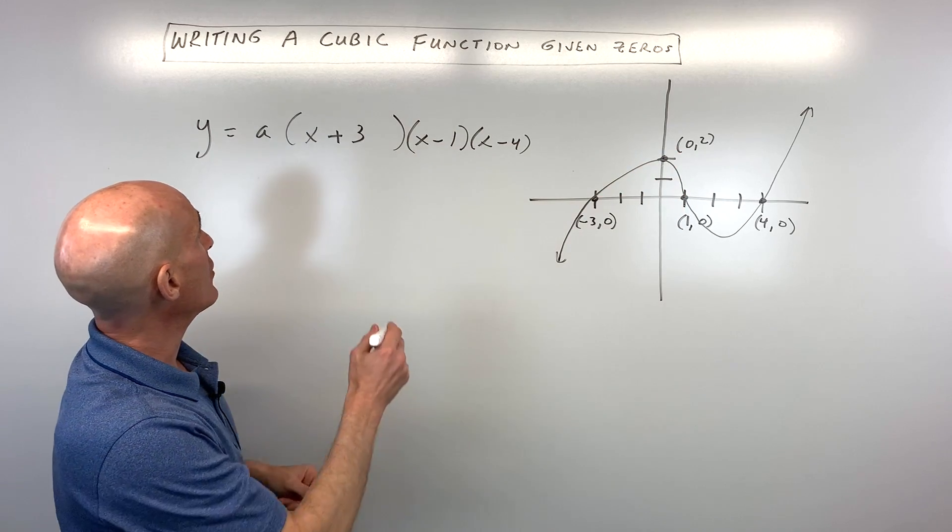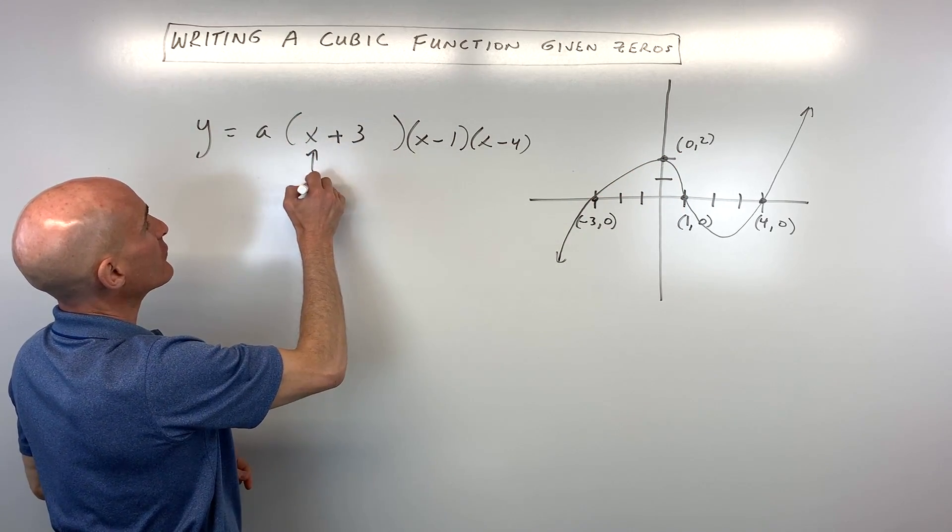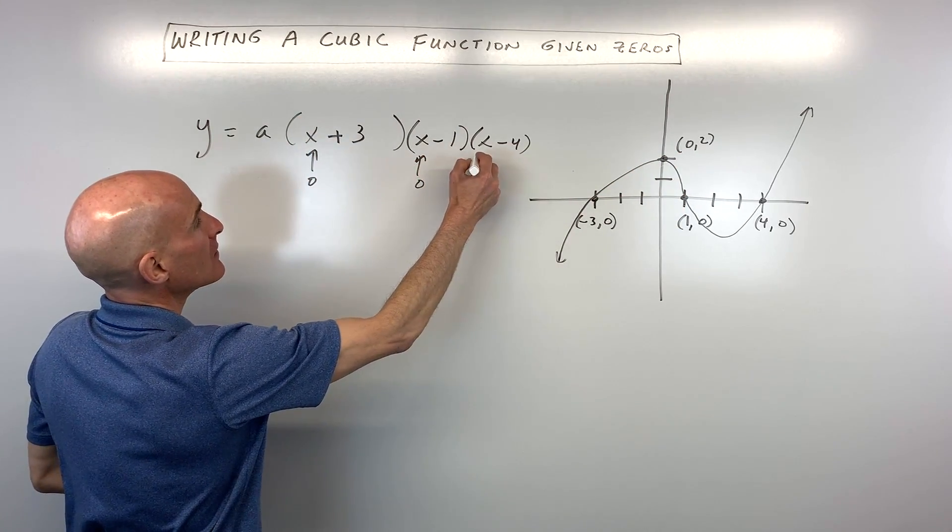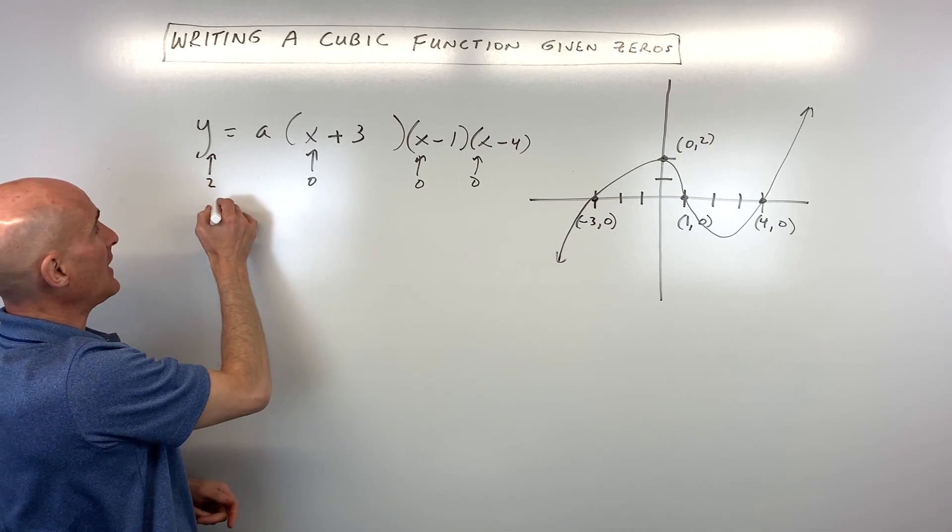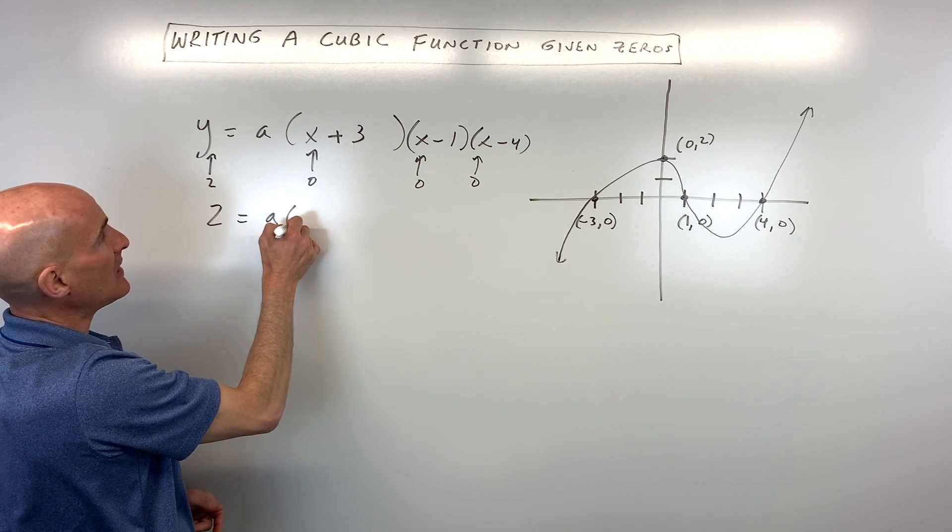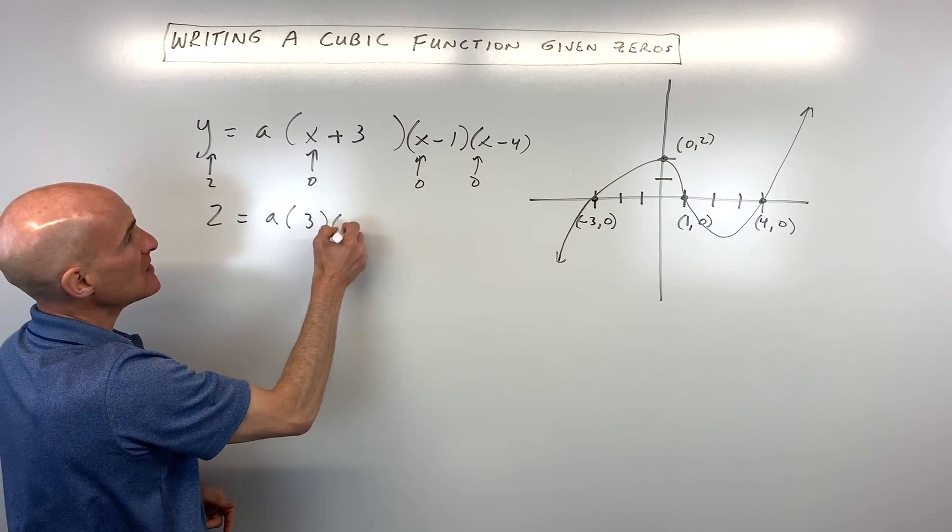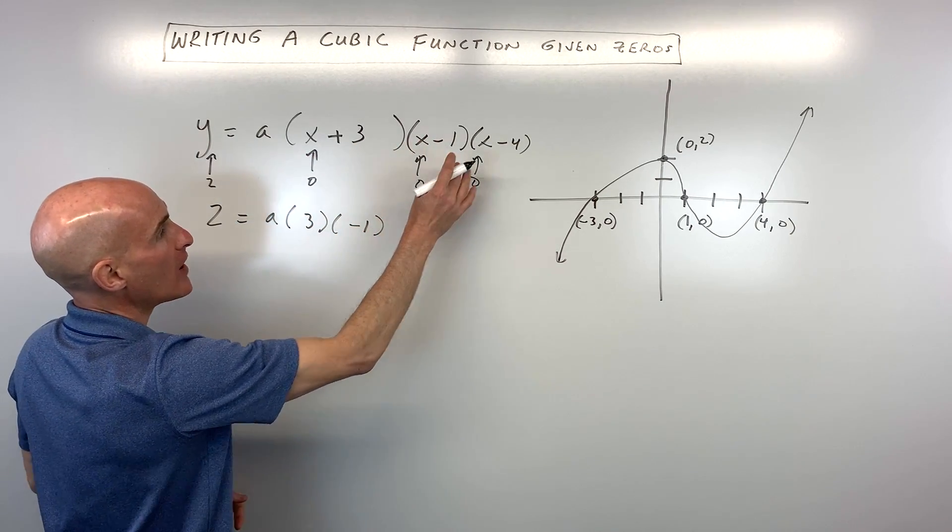So in this case x is zero so let's go ahead and put zero in for each of these x's and y equals two so let's put two in for y here and we're going to solve for a.